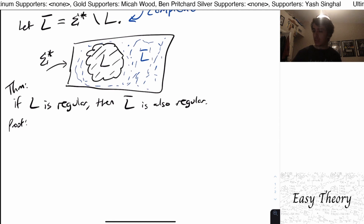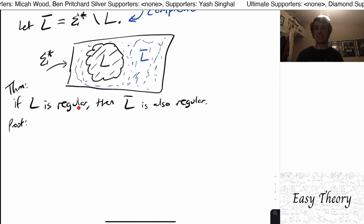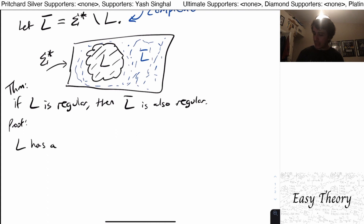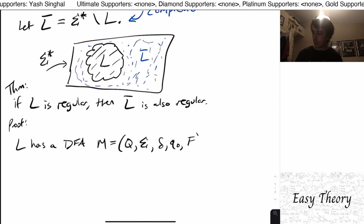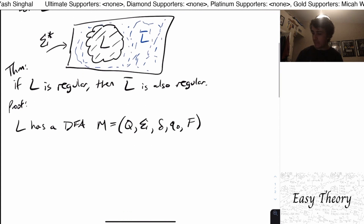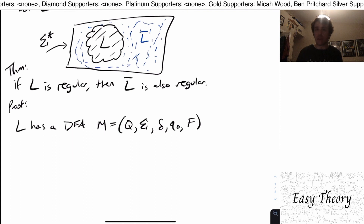So let's prove this. Here's a pro tip: whenever you see something like 'L is regular,' immediately think about what that means. In our context, that means L has a corresponding DFA. So L has a DFA — let's call it M — and it has five parts: Q, sigma, delta, q-zero, and F. It has a DFA because it's regular; we're assuming L is regular, and that's the definition of what a regular language is.